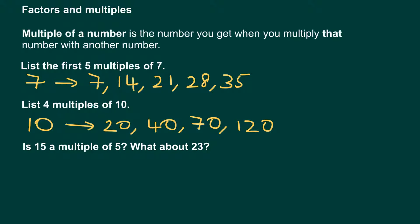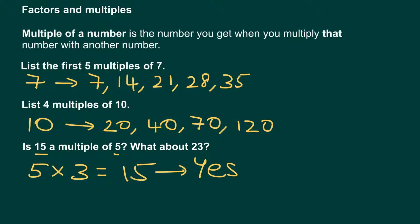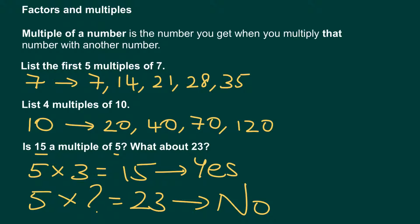Finally, we have: is fifteen a multiple of five? What about twenty-three? Let's work with fifteen first. Does the number five go into fifteen? Yes, it does, because five times three gives us fifteen. So yes, fifteen is a multiple. What about twenty-three? Is there any number in the fives table that goes into twenty-three? Five times one is five, five times two is ten, five times three is fifteen, five times four is twenty, and five times five is twenty-five. So there's no number that goes into twenty-three in the fives table — twenty-three is not a multiple of five.